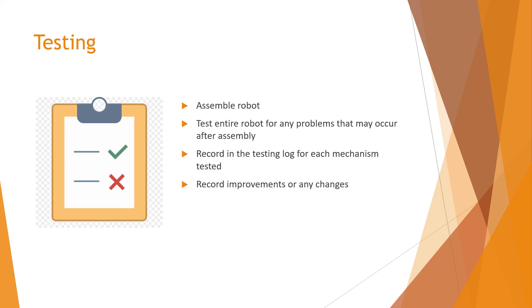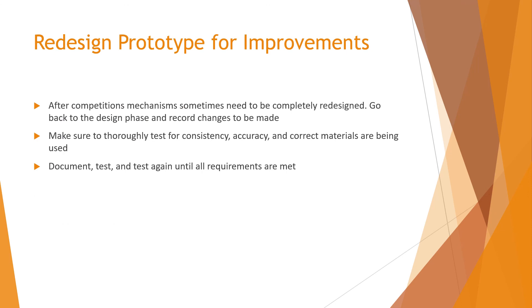After significant amounts of testing of multiple mechanisms together, the robot can be assembled. Over the course of the season, improvements will need to be made to the robot to overcome issues that may have come up at competitions. It is important to gradually improve as the season progresses to have the best robot by the end of the season. A testing log should be created to record how the different mechanisms work together or if the mechanisms operate differently. Some mechanisms may need to be completely redesigned — if so, refer back to the design phase and document any changes that have been made. It is also important to thoroughly test for consistency, accuracy, and the current materials that are being used. Document everything and test, as this may be important for future tests.